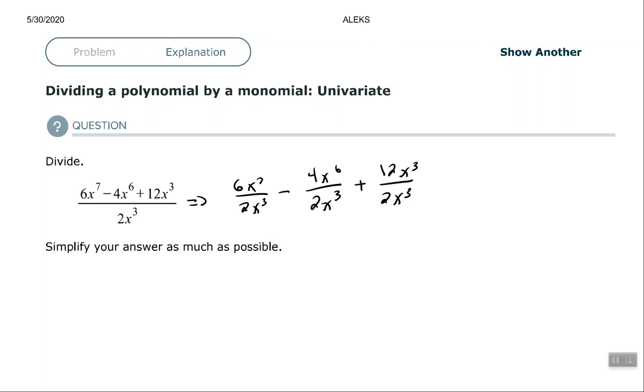So you separate the fraction, break it up into three separate fractions, and then you just simplify each fraction. On the first one, 6 divided by 2 is 3, use the quotient rule—x to the fourth.